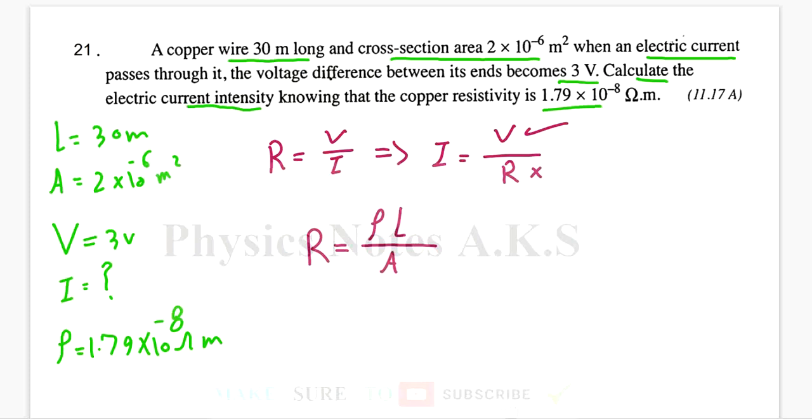I have the rho, I have the L, I have the A. So, rho is 1.79 × 10^-8, multiply L is 30, area is 2 × 10^-6. So, I got the R resistance. I use my calculator, it is 0.2685 ohm.